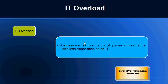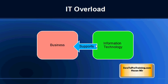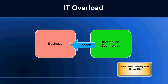Usually business is the owner of the applications used by the company — for example ERP applications — and the IT department is there to provide support. Business does not want to depend on information technology too much because the turnaround time of requests is not as fast as they would expect, since the IT department is usually overloaded. So business always wanted to own reporting and inquiry in their own hands. Since the market changes and requirements change so rapidly, business would like to have the ability to perform ad hoc inquiries on the system.